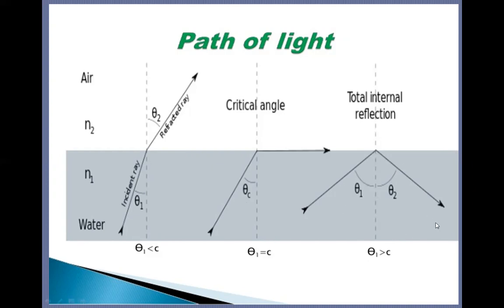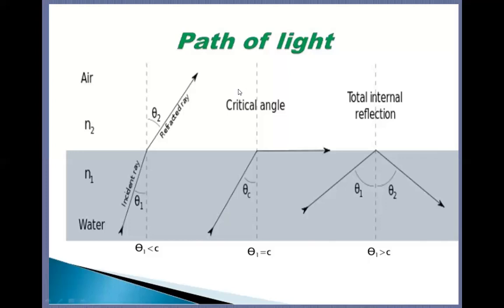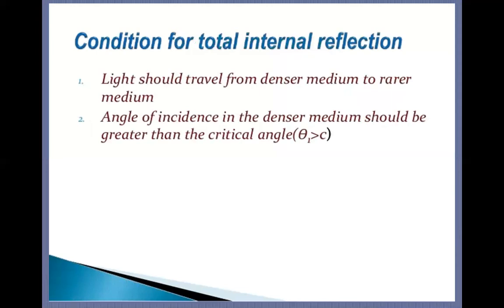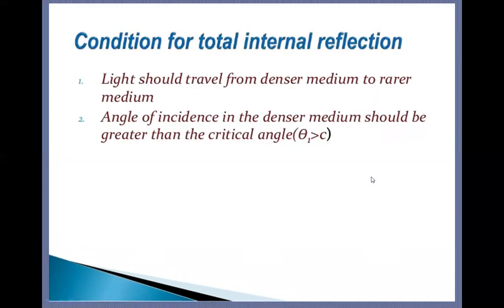There are two important conditions for total internal reflection that you must keep in mind. Number one: the light ray should travel from a denser to a rarer medium — as shown in the diagram, the light travels from water to air. Number two: the angle of incidence in the denser medium should be greater than the critical angle. The angle of incidence is always measured in the denser medium. If both conditions are met, total internal reflection occurs.